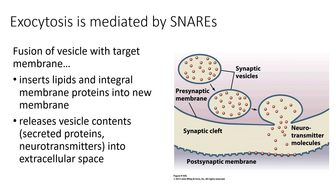Now that we've talked about how vesicles are formed and how we get cargo inside them, it's important to think about the last part: once the vesicle reaches its final destination, how does it release its contents? How does it know it got to its destination membrane? How does it fuse with the membrane to release secreted proteins or membrane proteins? This is mediated through a set of proteins called SNAREs. Exocytosis — when a secretory vesicle releases its cargo outside the cell — is mediated by SNAREs.